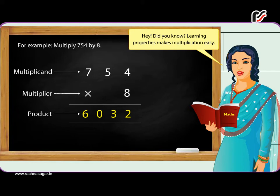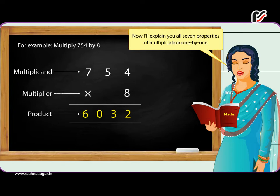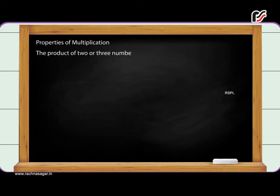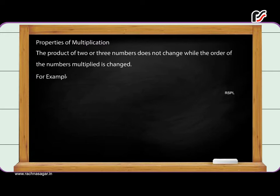Learning properties makes multiplication easy. I'll explain all 7 properties of multiplication one by one. Properties of Multiplication: The product of two whole numbers is a whole number. For example, 7 multiplied by 5 is equal to 35. Closure property: The product of two or more numbers does not change when the order of the numbers multiplied is changed.